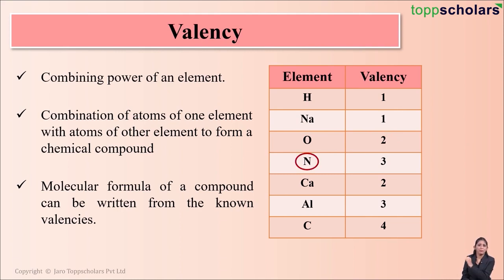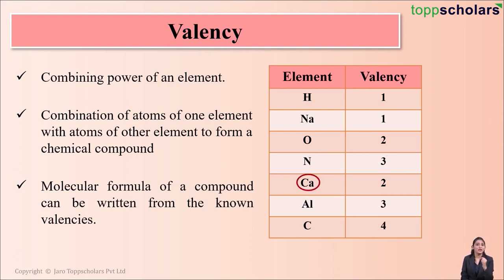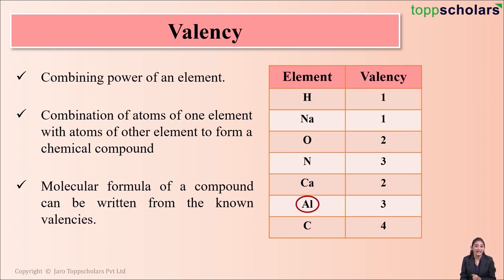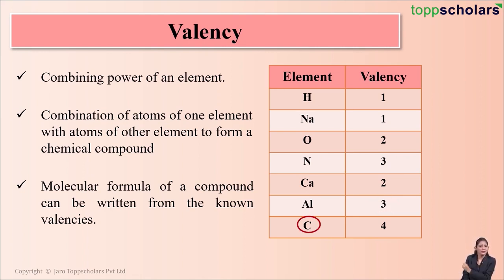Nitrogen has the symbol N and a valency of 3. Calcium has the symbol Ca and its valency is 2. Aluminium has the symbol Al and its valency is 3. The last one — the symbol C stands for carbon, and the valency of carbon is 4.